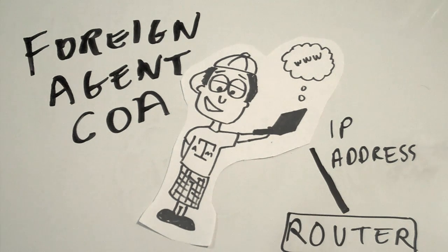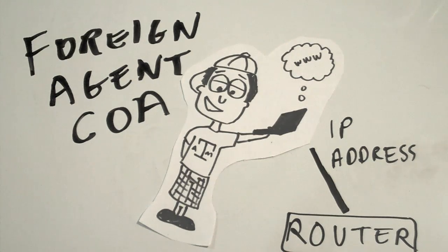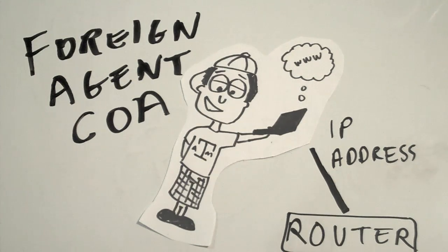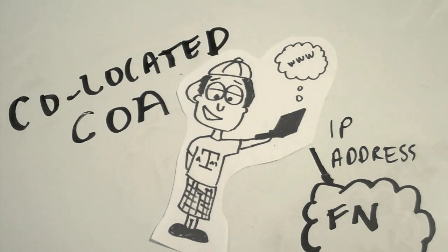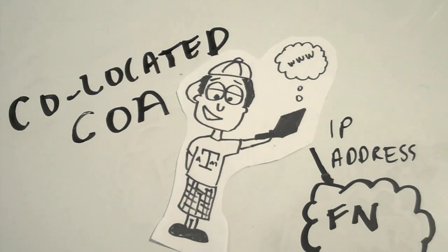The foreign agent care-of address is where the mobile node uses a foreign agent's IP address as its care-of address. The co-located care-of address is when the network interface of the mobile node is temporarily assigned an IP number on the foreign network.